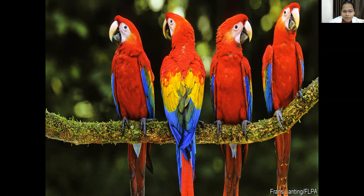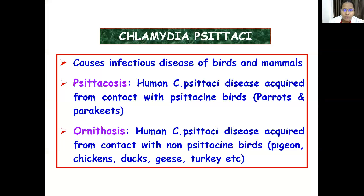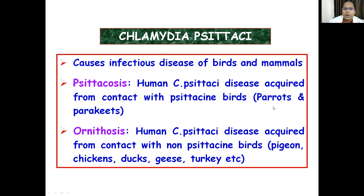These are the beautiful parasites responsible for causing the infection known as psittacosis. The Greek word for parrots is 'psittakos,' first used by Morange. This infection is mainly caused by parakeets and parrots, which we call psittacine birds. It causes infection of birds as well as mammals. Psittacosis is a disease of parrots transmitted to man, and there is a similar disease called ornithosis, transmitted by non-psittacine birds — apart from parrots and parakeets.